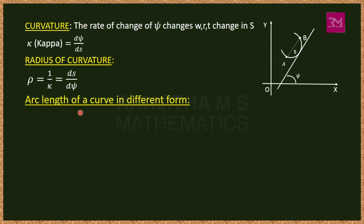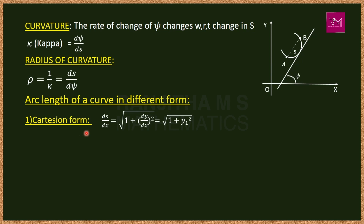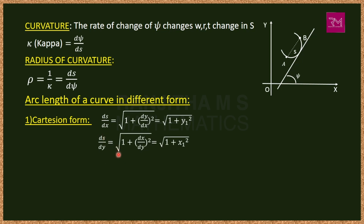Next, arc length formulas in different forms. In Cartesian form: ds/dx = √(1 + (dy/dx)²) = √(1 + y₁²), where y₁ denotes dy/dx. Similarly, ds/dy = √(1 + (dx/dy)²) = √(1 + x₁²), where x₁ denotes dx/dy. These are the arc length formulas in Cartesian form.